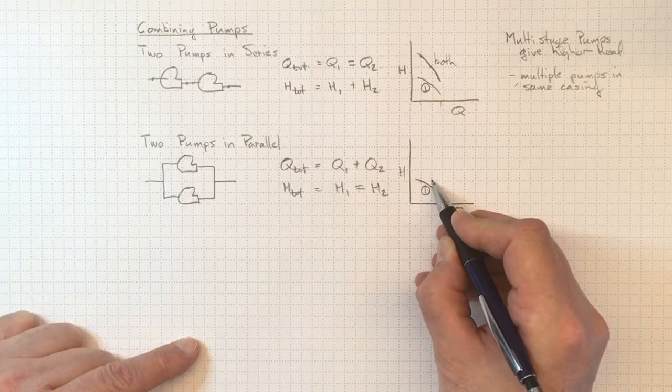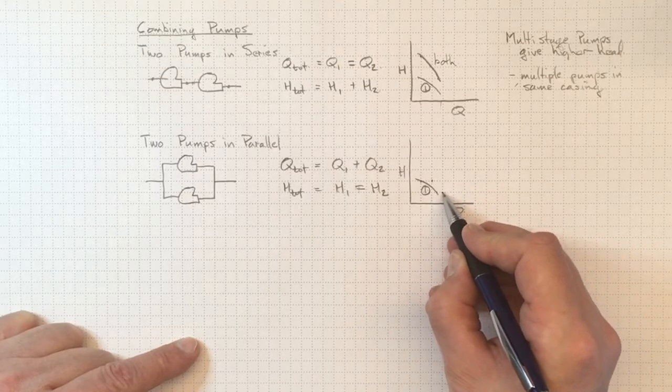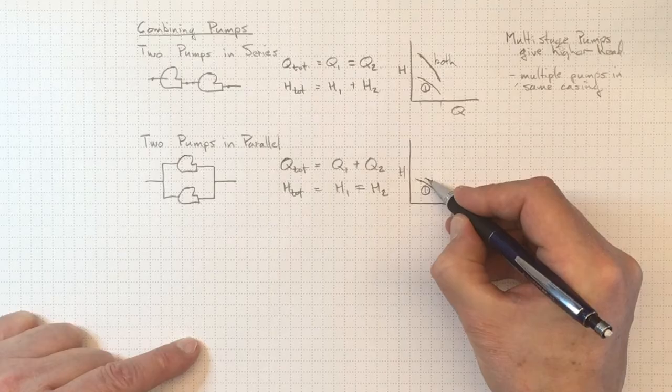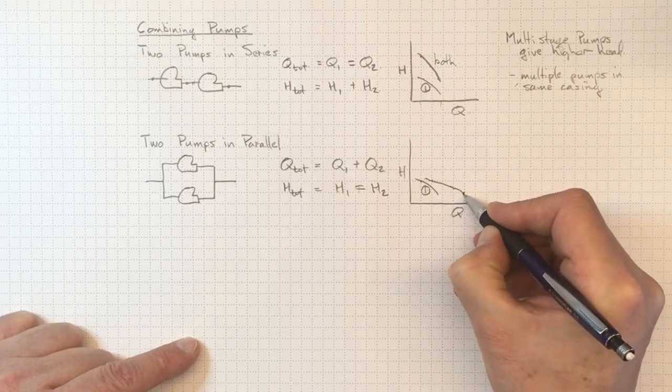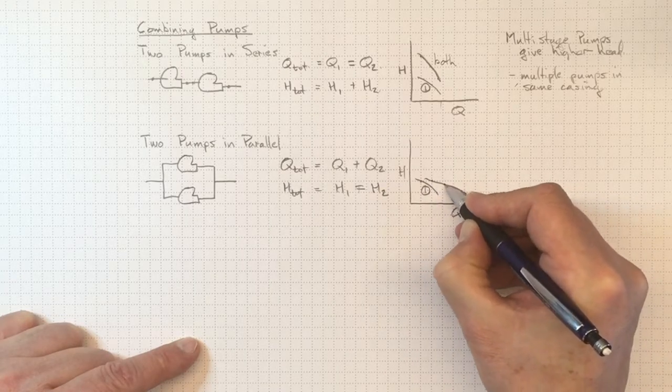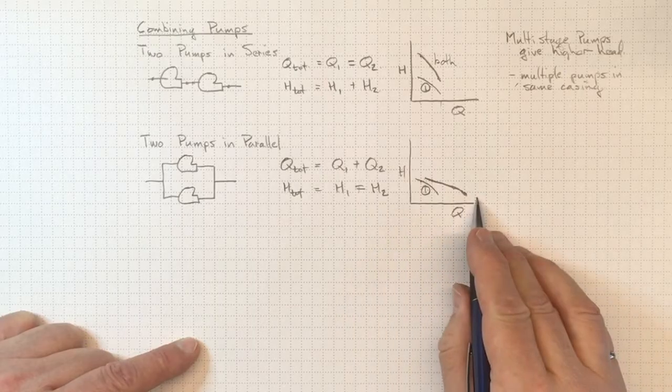So instead of that point, I'll be out here. Instead of this point, I'll be out here. And so this is the result that I'll get from the combination of the two of them is a head flow curve like that.